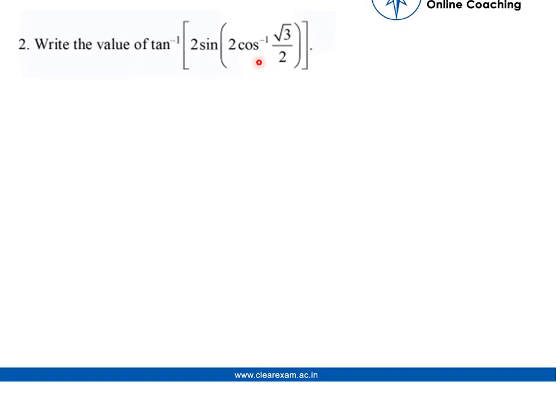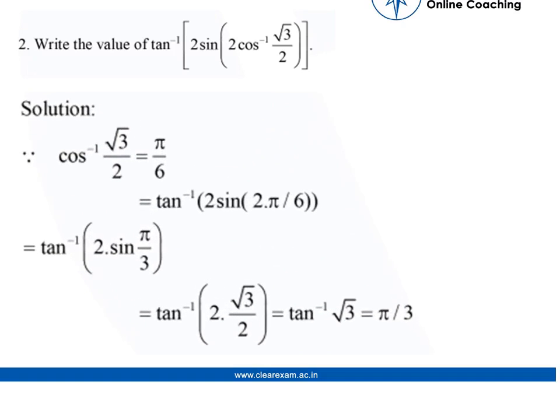So first we'll solve cos inverse root 3 by 2. For solving that we know that the value of cos inverse root 3 by 2 is pi by 6.